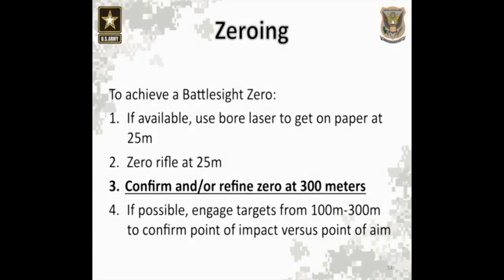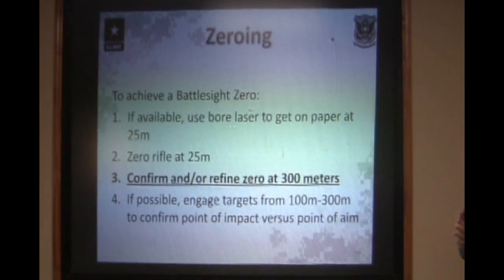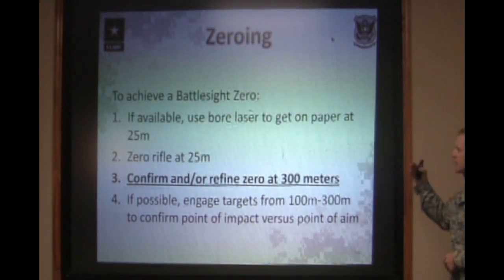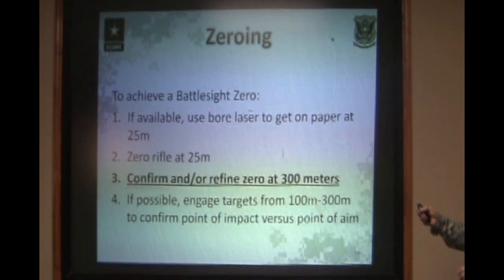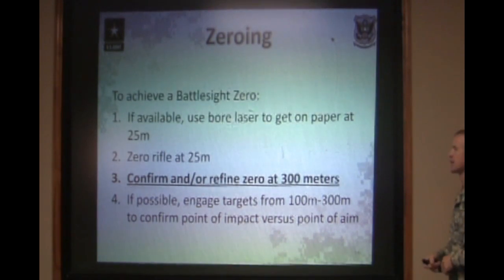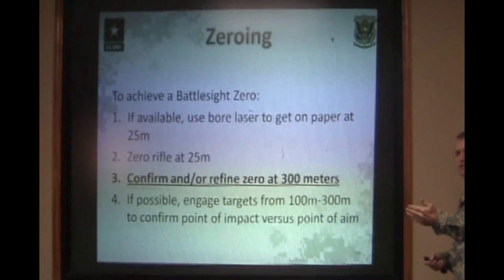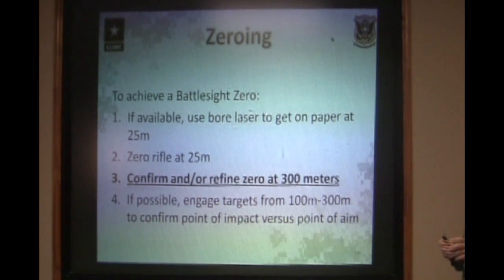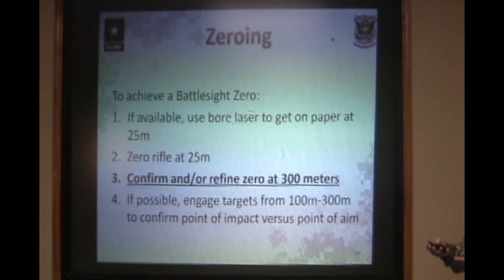To achieve a battle sight zero, if you're able to, you can use a bore laser to basically get the sights lined up so they're on paper at 25 meters. This keeps you from going out to the 25-meter range, firing your first group, and not being on paper. Once you get to the 25-meter zero range, you have to zero that rifle at 25 meters — meaning you manipulate your sights to where your point of aim is center mass on the target and your groups are coming up center in the silhouette. Next you need to confirm and refine your zero at actual distance — 300 meters. A 25-meter zero is good to have on the rifle, but when you move to the 300-meter range, that zero could be off by several inches one way or the other, and you couldn't tell at 25 meters.